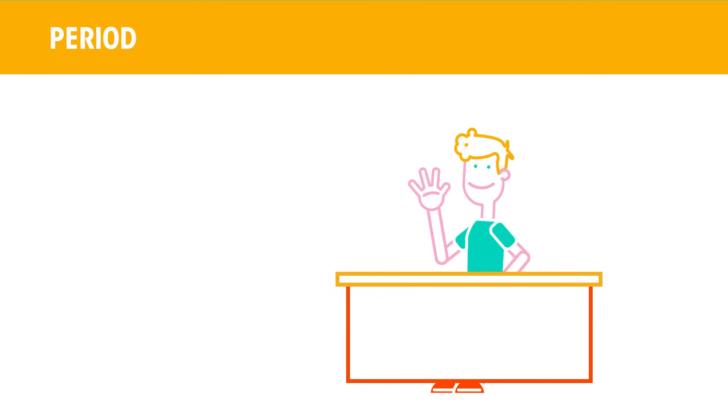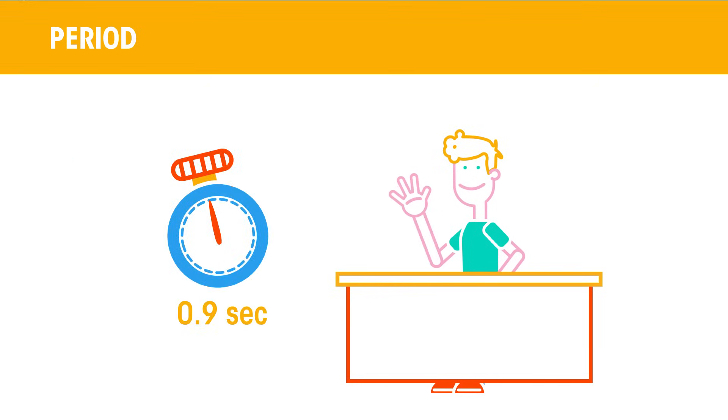The period of a wave is the time for one complete cycle, so the time taken for one person to stand up, wave and sit down. This would be measured in seconds.